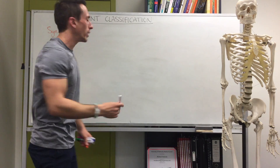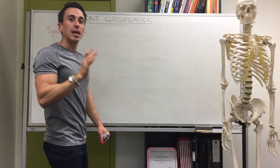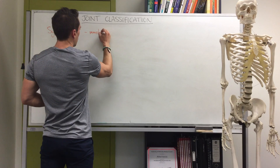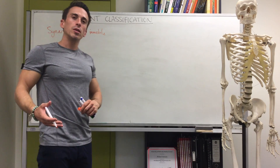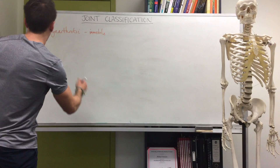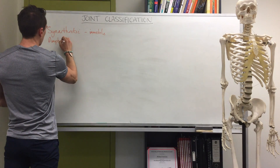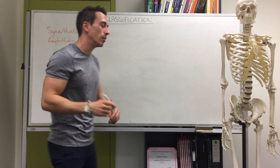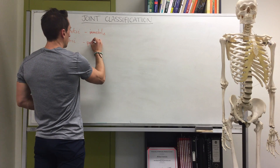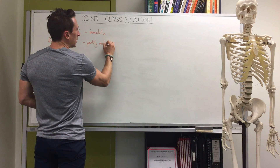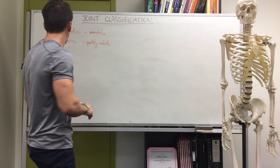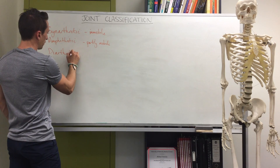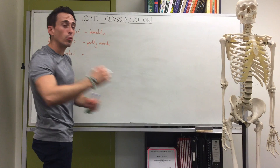A synarthrotic joint is an immobile joint — a joint that cannot move. There's also something called an amphiarthrotic joint, which is a joint that can partially move, so it has a little bit of leeway. Then the last type of joint is a diarthrotic joint, which is a freely movable joint.